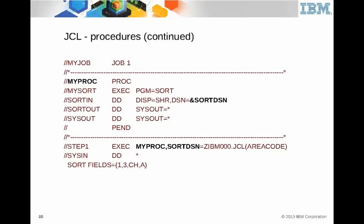When you say EXEC MYPROC, you substitute SORTDSN with a data set name and member name, and include a DD asterisk with the sort fields. That's the in-stream proc being executed. Most of the time people don't use in-stream procs — there's actually a procedure library, multiple of them. You can execute MYPROC and it will search through the procedure libraries for that proc. That's non-in-stream, and many times that's what people do — they have procs that they execute.